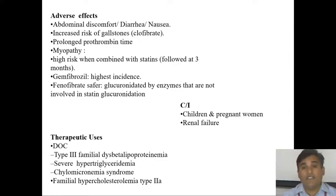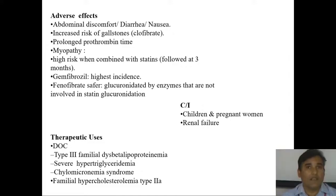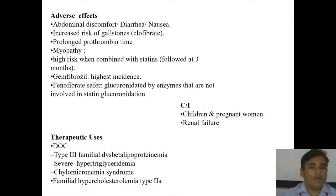Fibrates are contraindicated in children, pregnant women, and renal failure. Drug of choice for type III familial dysbetalipoproteinemia — where triglycerides and cholesterol are equally increased — severe hypertriglyceridemia, and other types of hypertriglyceridemia including type 2A.